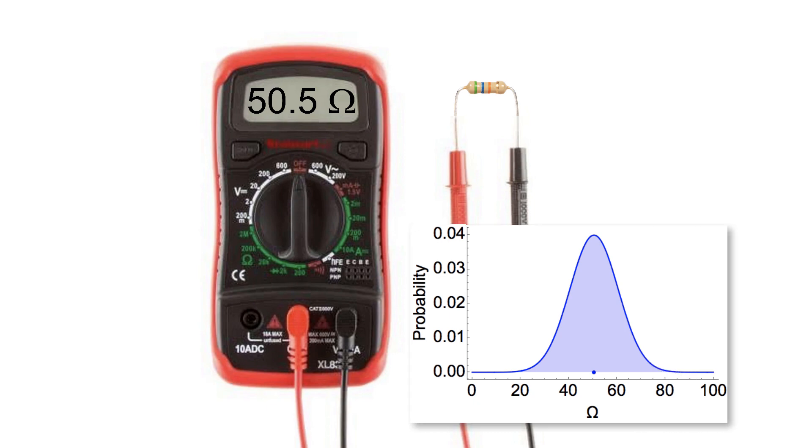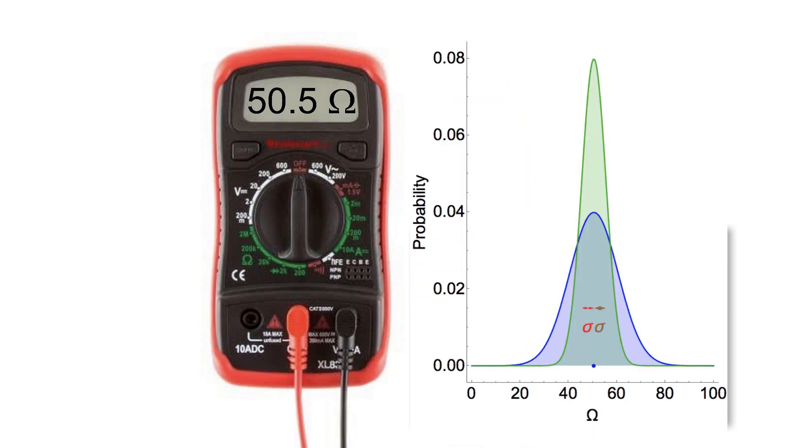65% of the time, the true value is within one standard deviation of the mean. If the standard deviation is tight, then we say the sensor measurement is accurate.